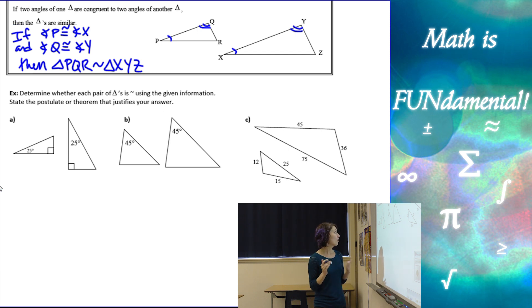So if we look at A, we have two 90 degree angles and two 25 degree angles, which means, yes, they are similar by angle-angle similarity. We don't have to do anything else. If I have two congruent angles, I'm done.